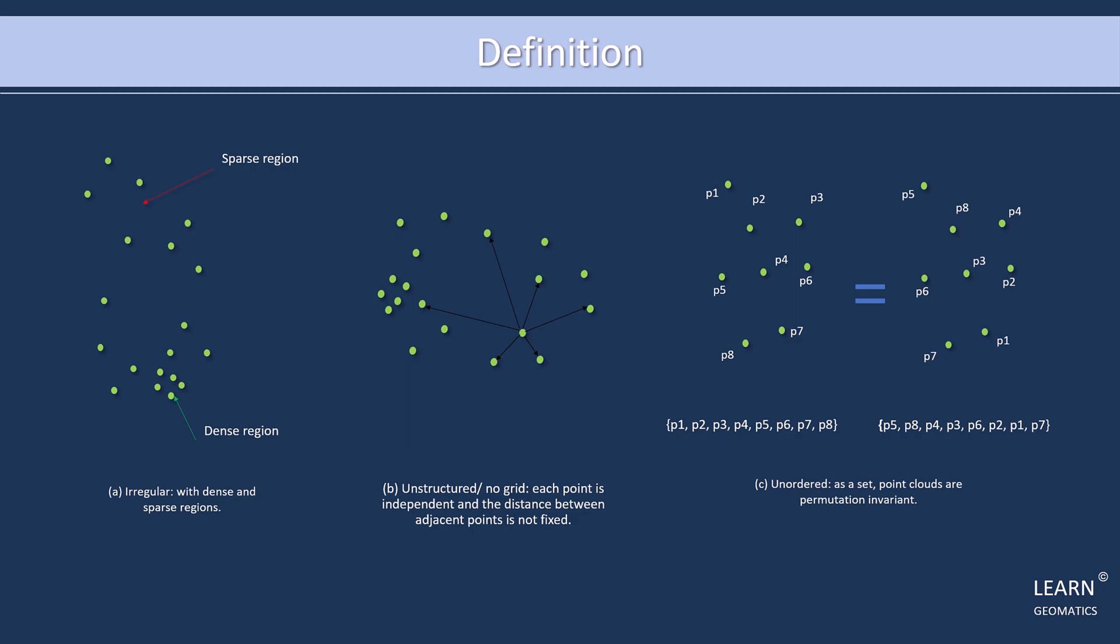Thirdly, point clouds are unordered and permutation invariant, meaning that as a set, point clouds do not have a specific order and any ordering can be considered equivalent. For example, if you were to scan a chair from different angles, the point cloud data would be the same regardless of the order of the points. These three characteristics can make it challenging to analyze and process them.